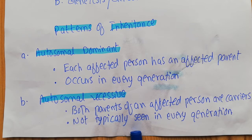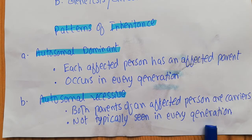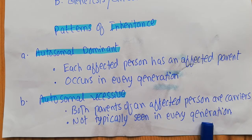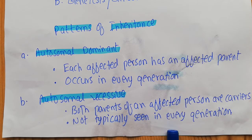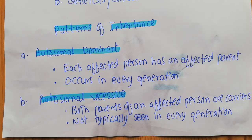Autosomal recessive disease is not typically seen in every generation. If a person receives a normal copy of the gene from one parent and a mutant allele from the other, they will be considered a carrier and will not express that particular disease.